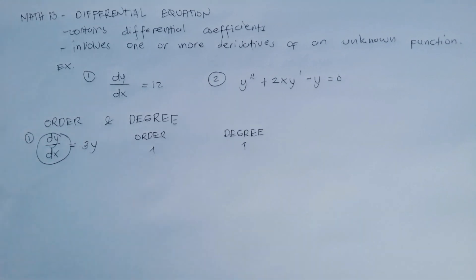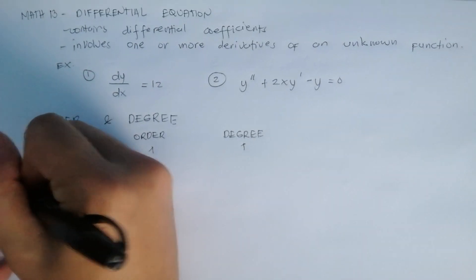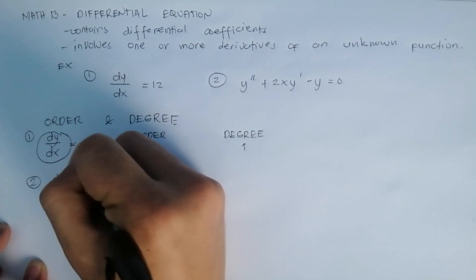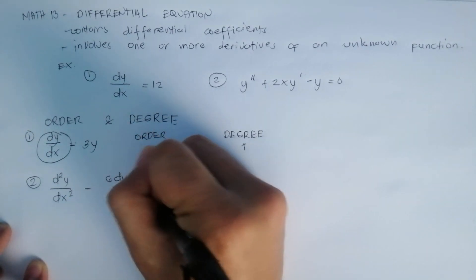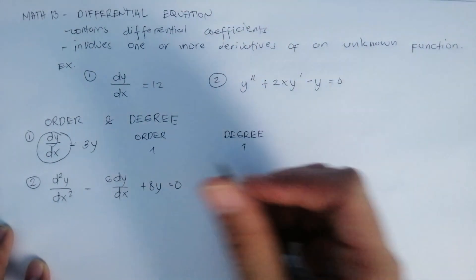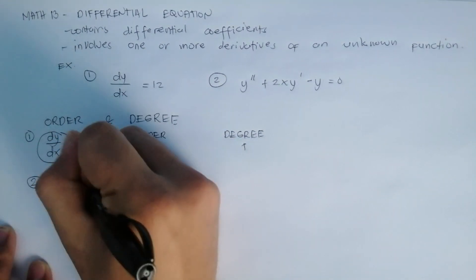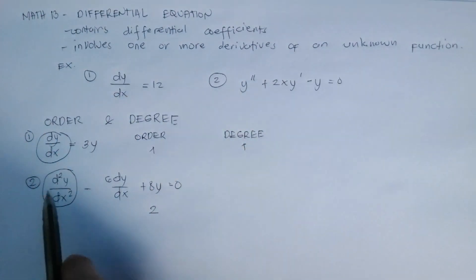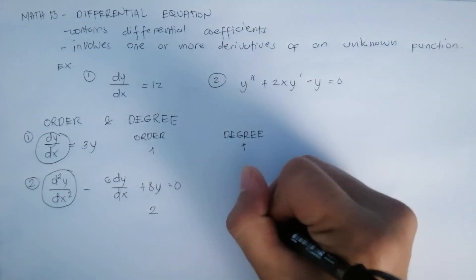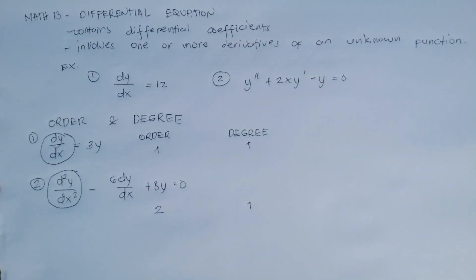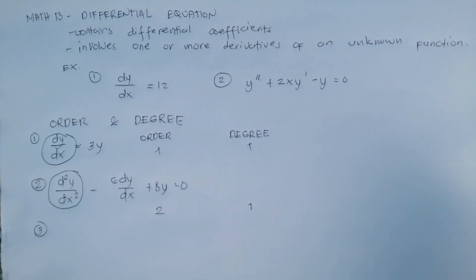For example number two, we have d²y/dx² - 6 dy/dx + 8y = 0. The order is 2 because this is the highest order derivative in the equation. The degree is 1 because the highest order derivative is raised to the first power — the function of y is at degree 1.